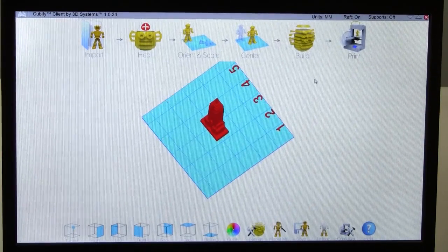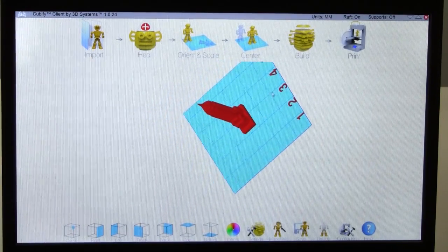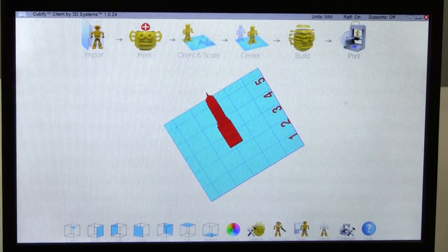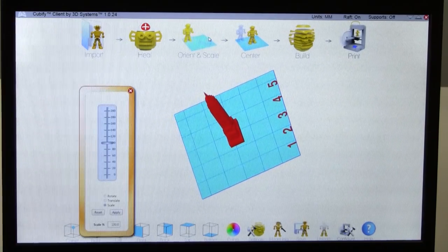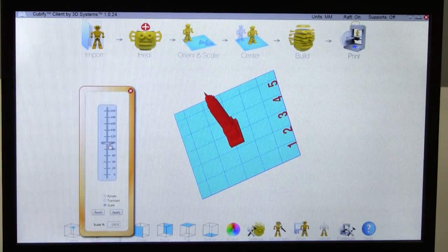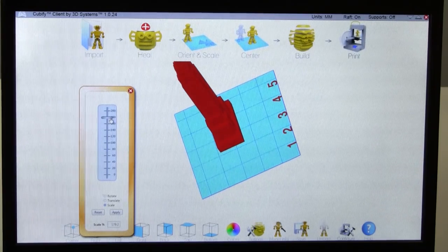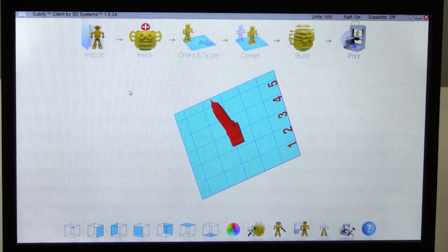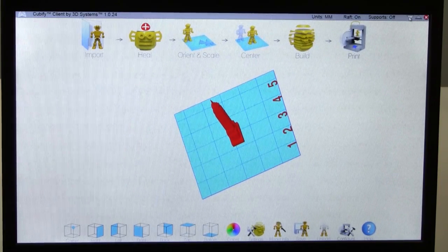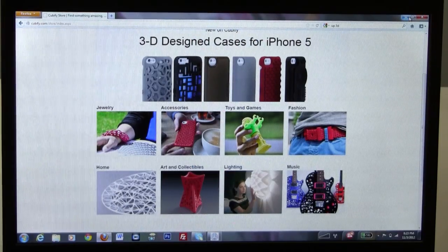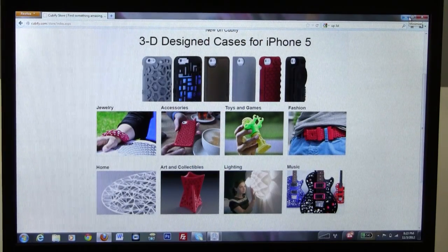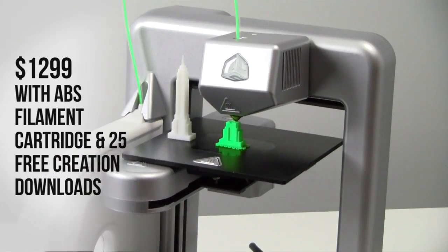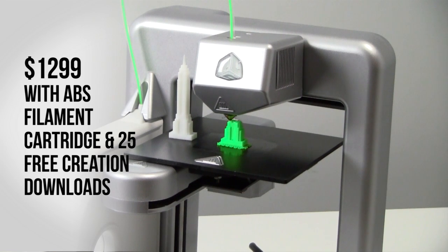Here we are running the Cubify client software package that comes with the Cube 3D. It's a fairly straightforward package, nice user interface, but it's a bit more stripped down and basic perhaps than what you get with the UP Mini. This package will take a standard STL file format and import it into Cube format or Cube file format. As you can see here, we're manipulating our model, and it does a nice job of giving you the ability to work with 3D models in general. 3D Systems also has a nice website at cubify.com where they offer some models for use, and you can either purchase them or with the purchase of a printer you get 25 free models in the package.